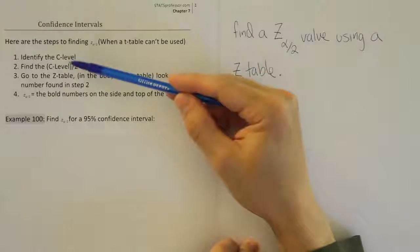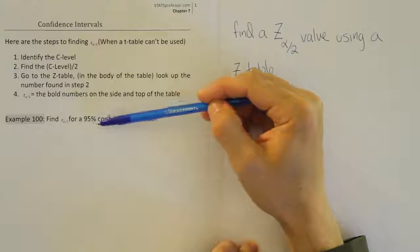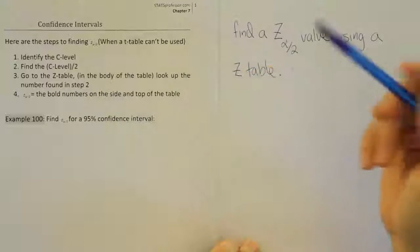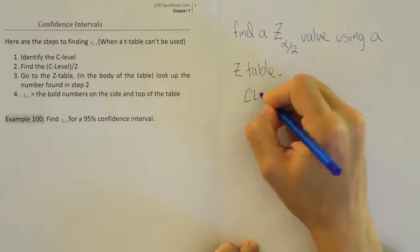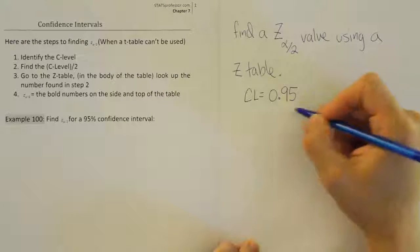So what we're going to do is pretty simple. According to the steps, we're going to identify the confidence level. In this case, we're trying to find the z alpha divided by 2 value for a 95% confidence interval. So with 95% as our confidence level, I'm just going to write down that our confidence level is equal to 0.95. So I write it as a decimal.